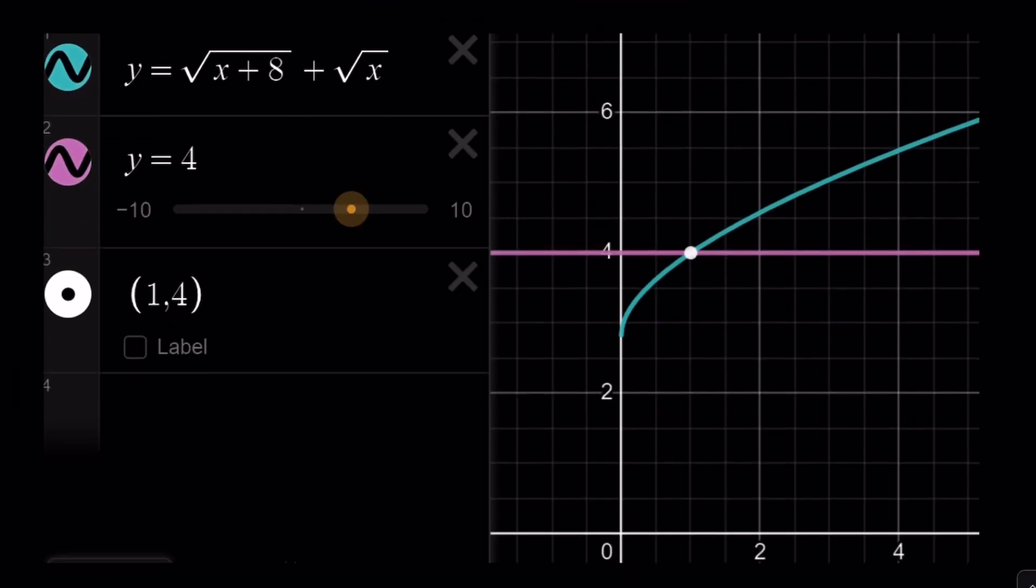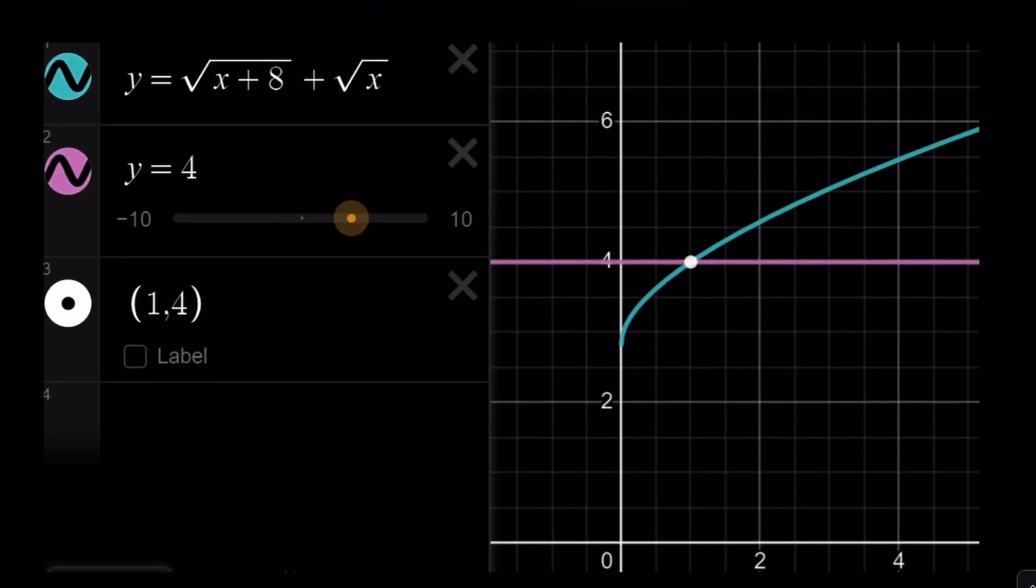And here's the graph of the situation. As you can see, this is the radical, that's the horizontal line. And they intersect at 1,4, which means there's only one solution to this radical equation.